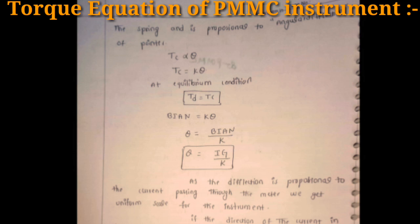Since deflection is proportional to current, the PMMC instrument has a uniform or linear scale — one of its key advantages. Other advantages include low power consumption (25 to 200 microwatts), and high sensitivity for DC measurements. Disadvantages include that it is used only for DC measurements, high cost due to delicate construction, and aging of the permanent magnets and springs introduces errors.